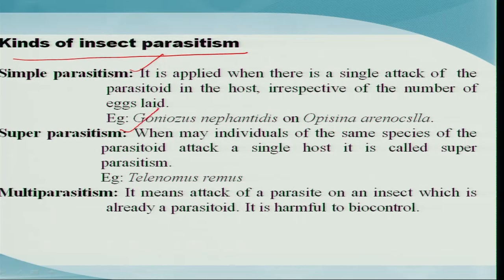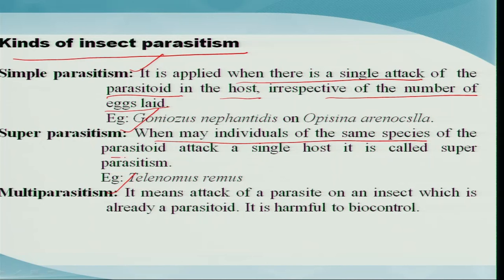Based on the kind of parasitism, we classify it as simple parasitism, super parasitism, and multi-parasitism. Simple parasitism is when there is a single attack of the parasitoid on the host, irrespective of the number of eggs laid — it may lay one egg or several but it is a single attack. Super parasitism is when many individuals of the same species attack a single host. Multi-parasitism is when a parasitoid attacks an insect host that has already been parasitized, which is not beneficial for the biocontrol program.